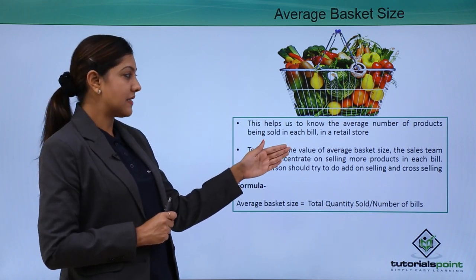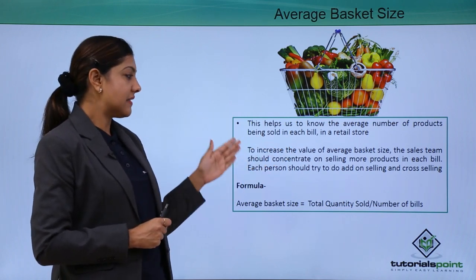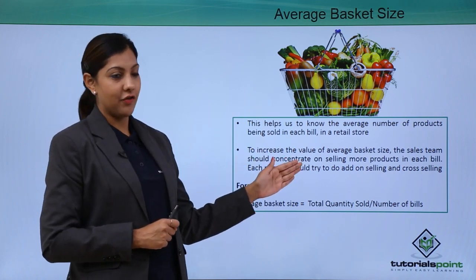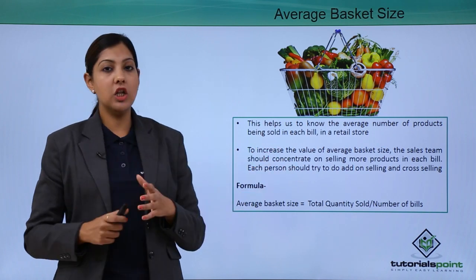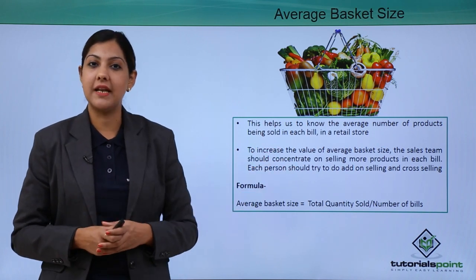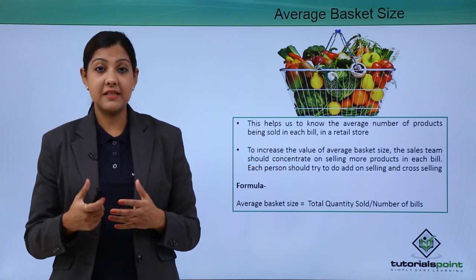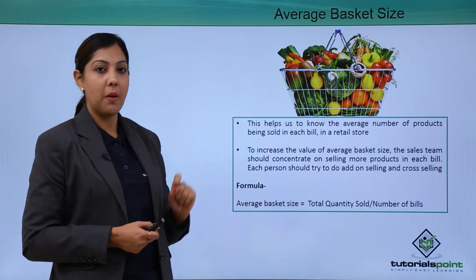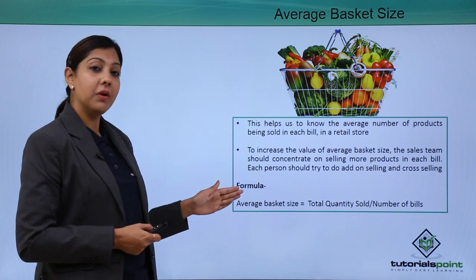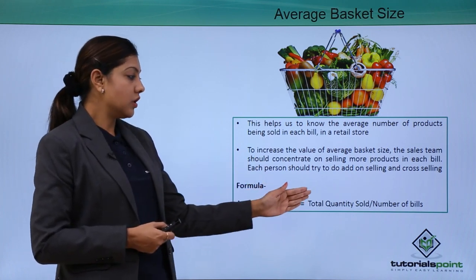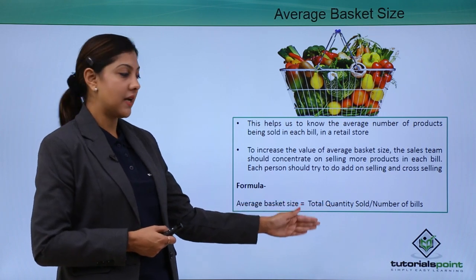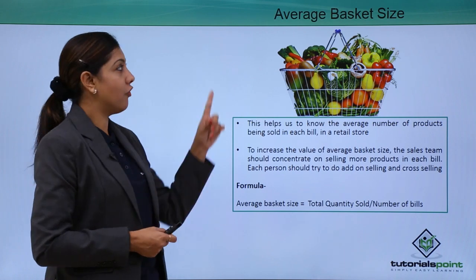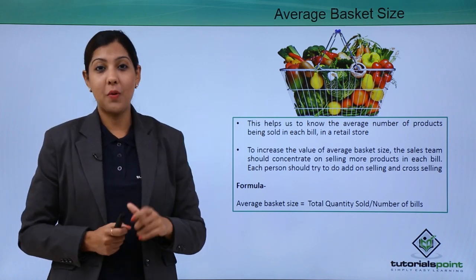To increase the average basket size, the sales team should concentrate on selling more products in each and every bill. Each person should try to do a lot of add-on selling and cross-selling in order to increase the number of products in one single bill. The formula is: Average Basket Size = Total Quantity Sold ÷ Number of Bills.